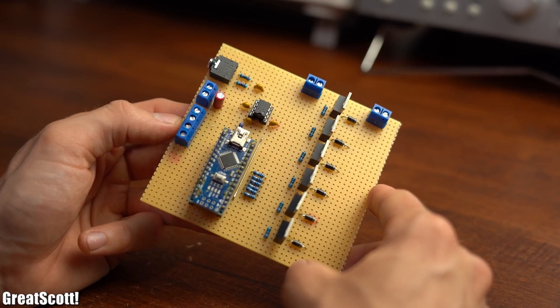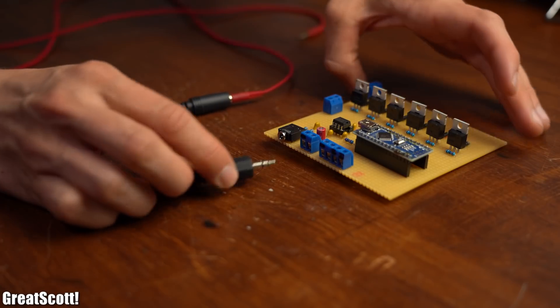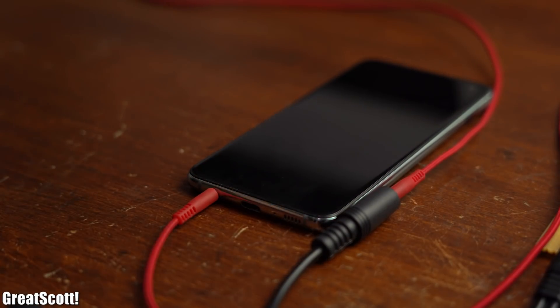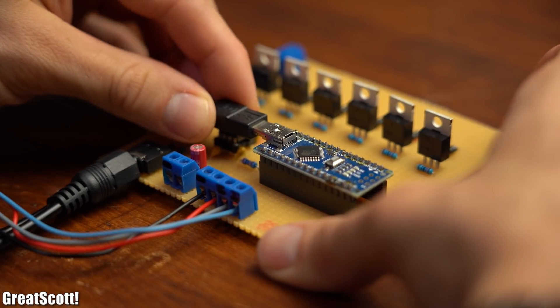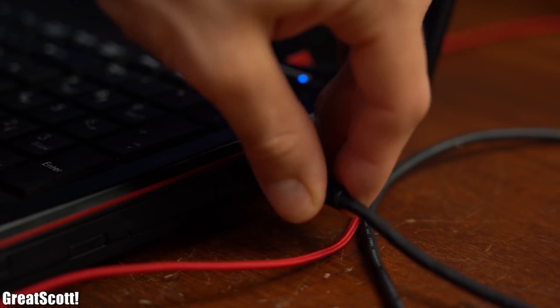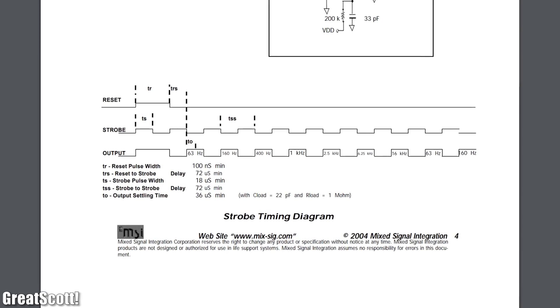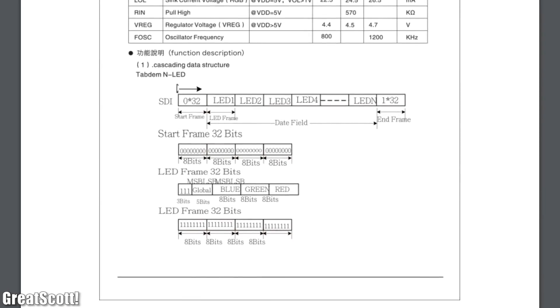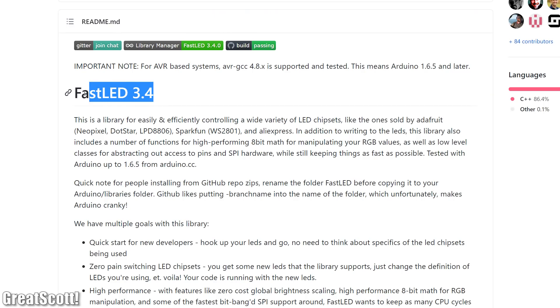But anyway after roughly around 2 hours the circuit was basically done and thus it was time to not only hook up an audio source to it in the form of my smartphone but also the LED strip. And after then connecting the Arduino to my computer it was time for programming. But instead of using the MSGEQ7 as well as the LEDs datasheet in order to create my own code from scratch, I rather used an existing MSGEQ7 library and the FastLED library.